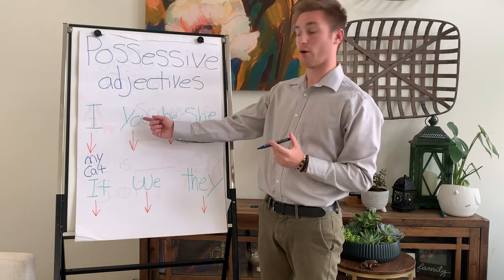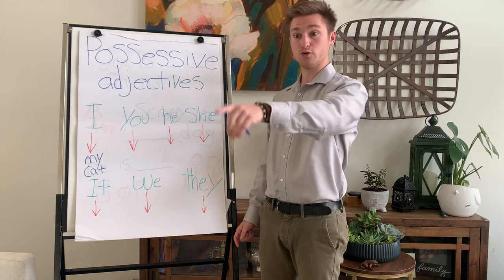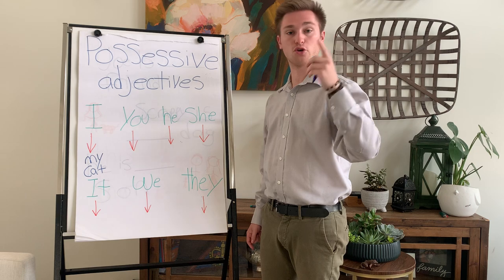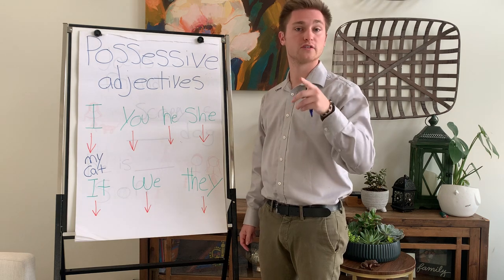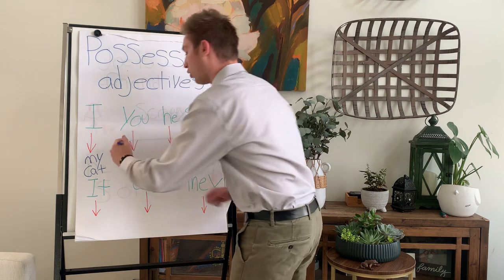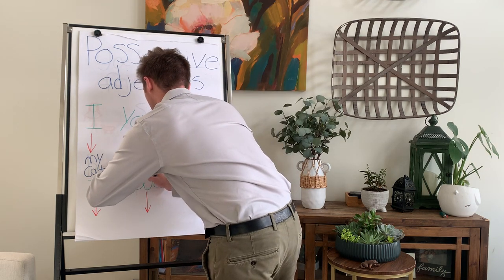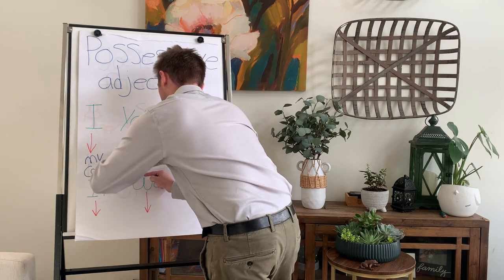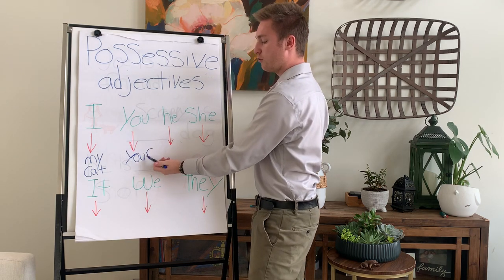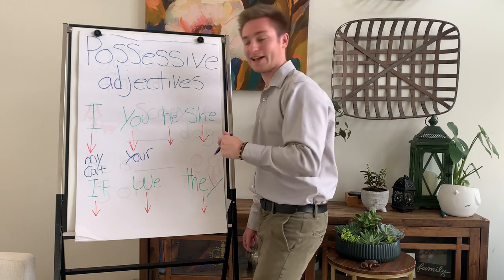For 'you', the possessive adjective is 'your'. You with an R — your. Spelled Y-O-U-R. That is your dog. That is your cat.